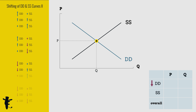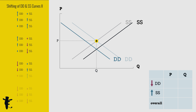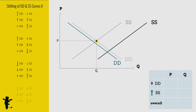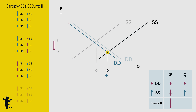When demand decreases and supply increases equally, price decreases and quantity stays the same. When the decrease in demand is small and the increase in supply is huge, price decreases and quantity increases.